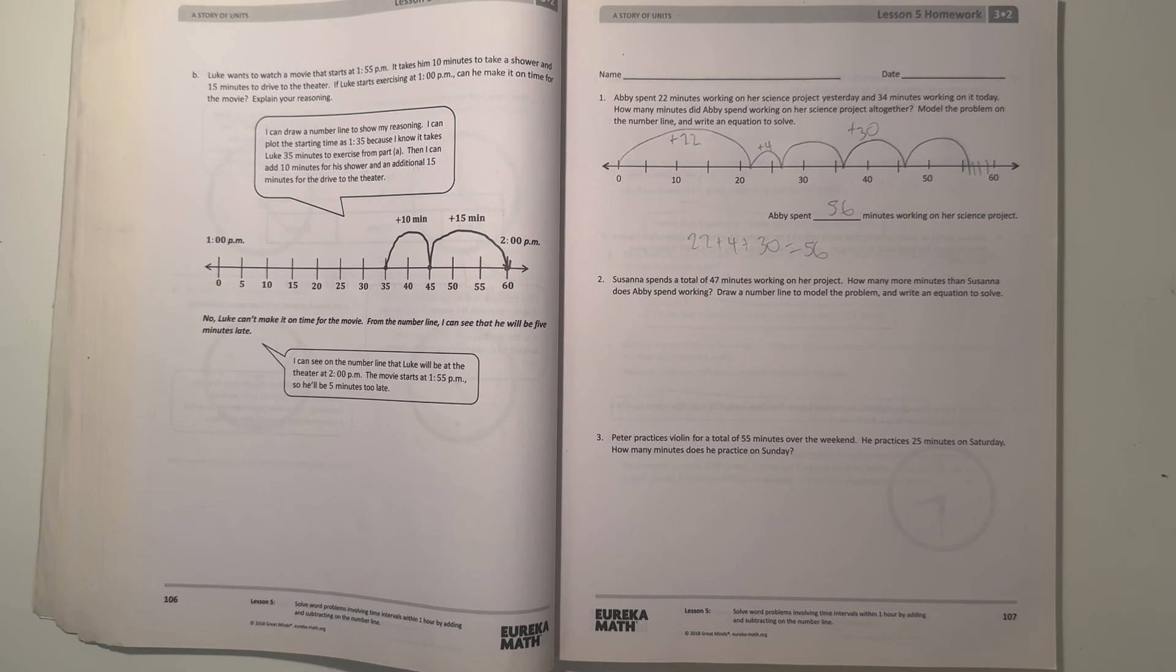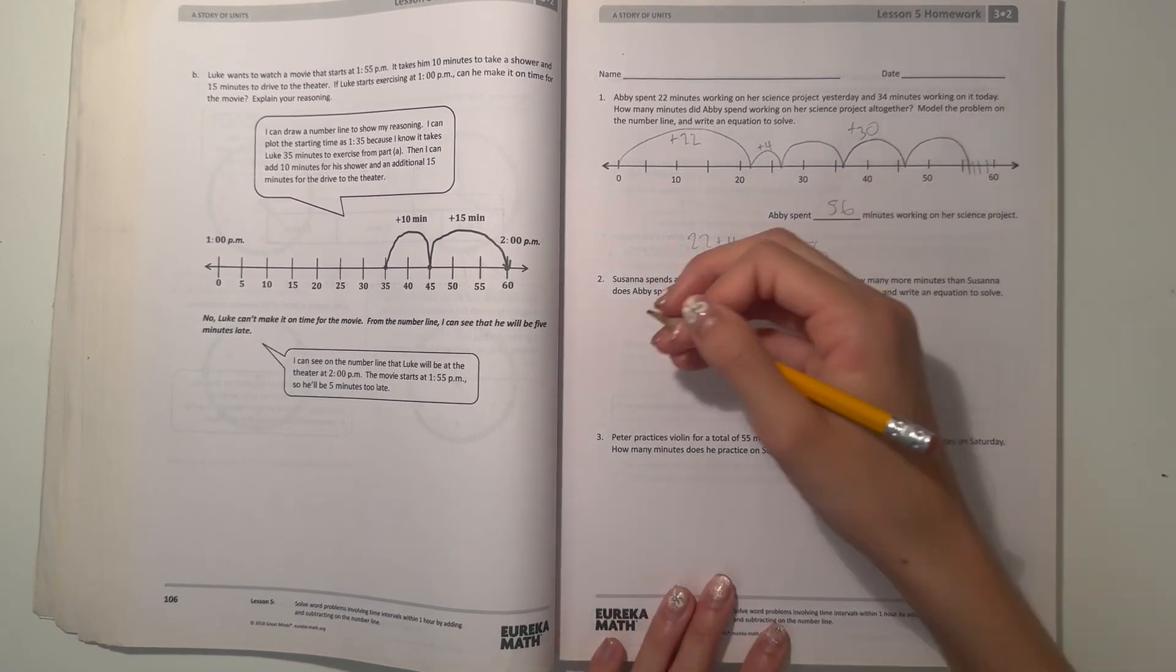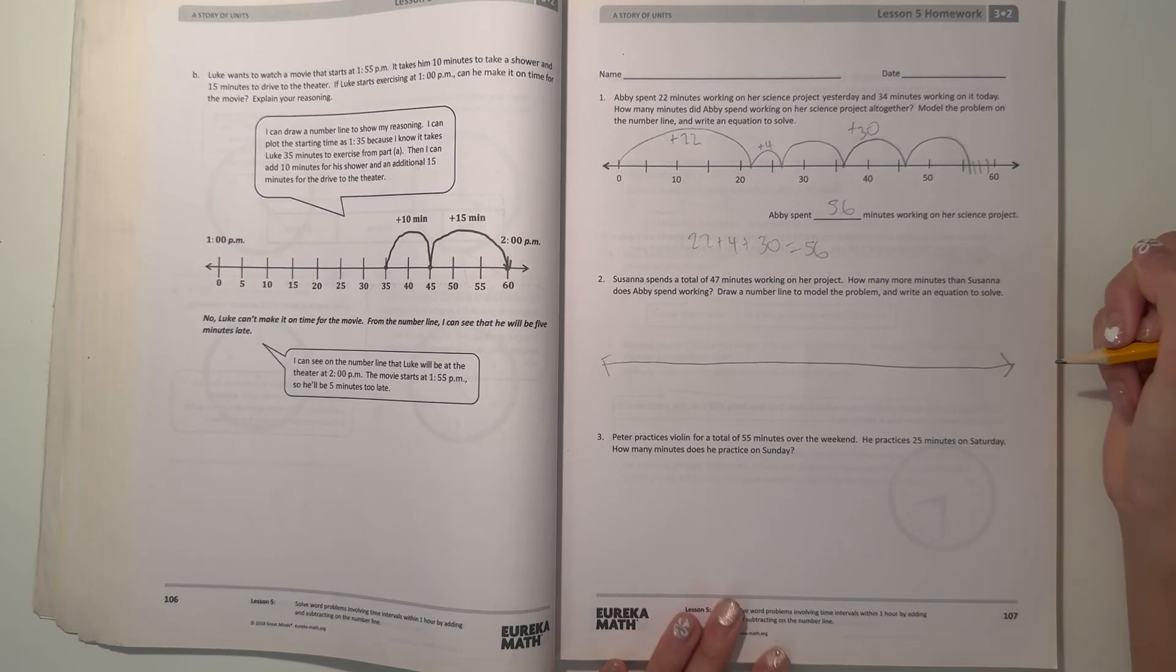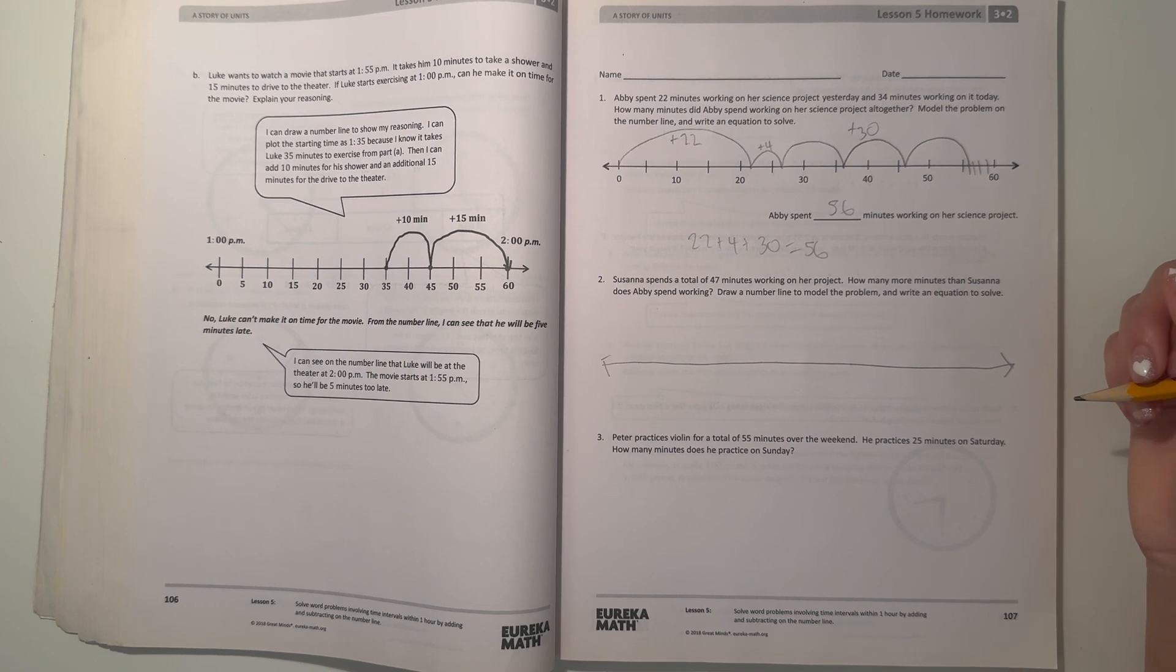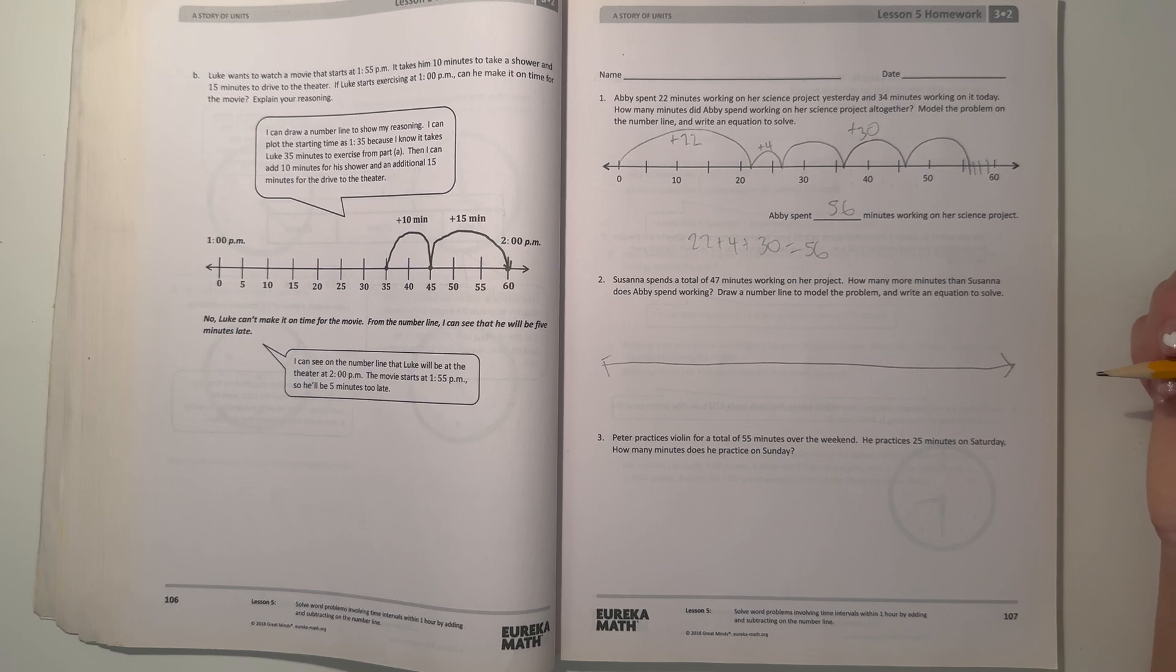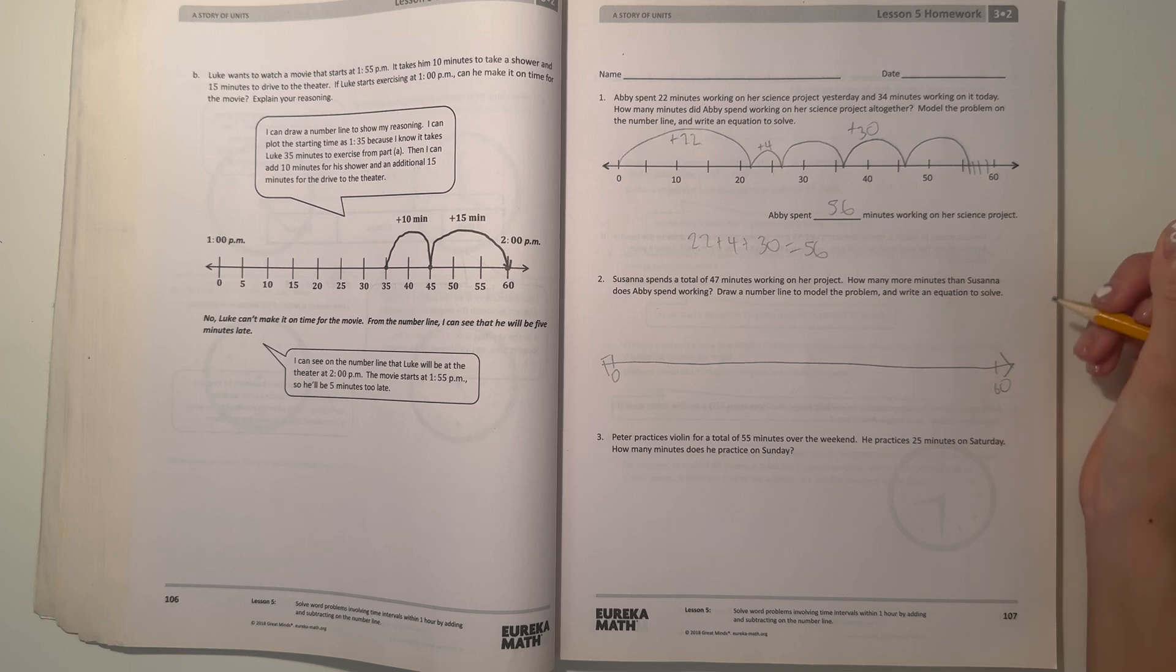Number two, Susanna spends a total of 47 minutes working on her project. How many more minutes than Susanna does Abby spend working? Draw a number line to model the problem and write an equation to solve. So we know that Abby spent 56 minutes and Susanna spent 47 minutes. Let's start with drawing a number line.